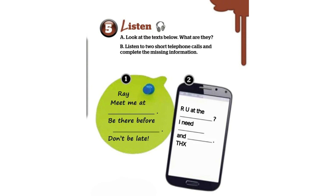Call two — Hello Mum, are you still at the supermarket? No, I'm going now and I just got your message. Great, don't forget to get me some crisps. Okay, sure. And the orange juice. See you soon.